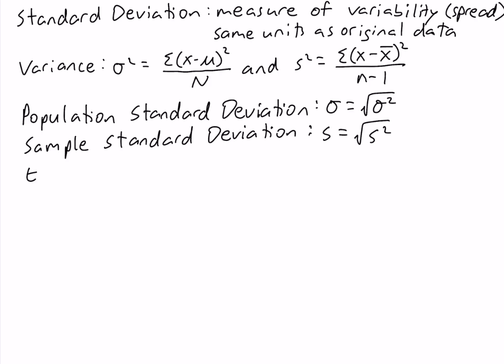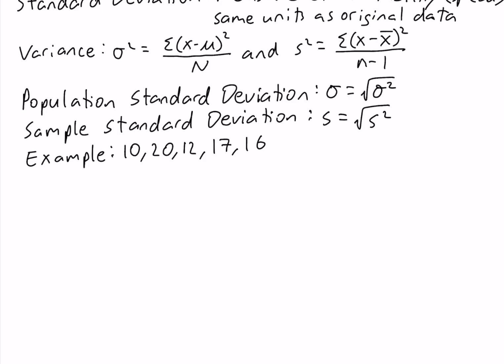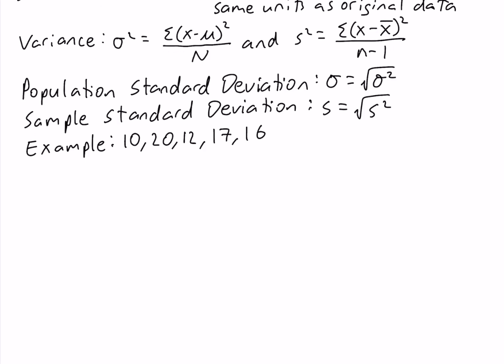Now let's look at an example. Suppose we have a sample with values 10, 20, 12, 17, and 16. Since this is a sample of data we want to calculate the sample standard deviation. But before we can get the sample standard deviation we first need the sample variance, so we want to create a table.